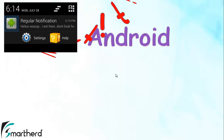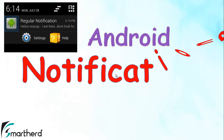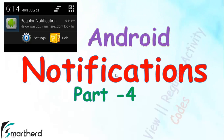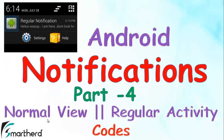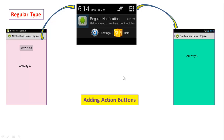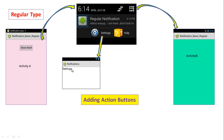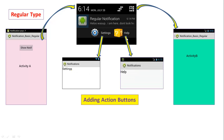Welcome back to the fourth part of notifications in Android. In this video we are going to continue our discussion on normal view regular activity. We are going to add two action buttons — Settings and Help — in our regular notifications. On the click of these two buttons we will be navigated to Settings.java and Help.java. Let us quickly jump onto Eclipse.